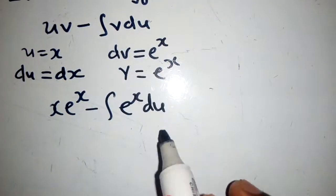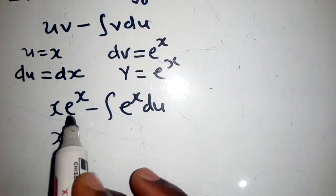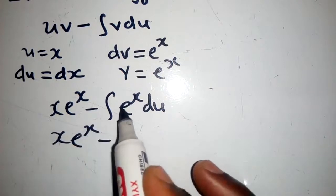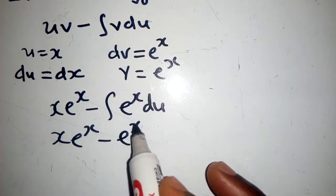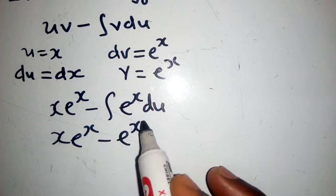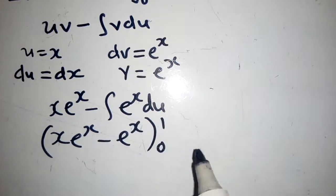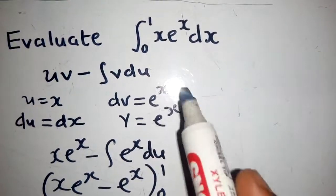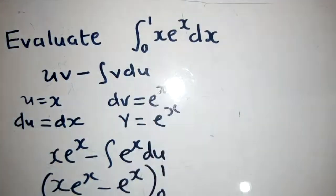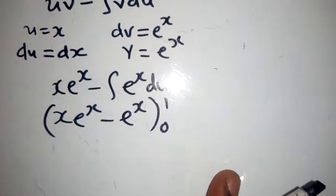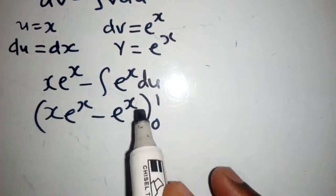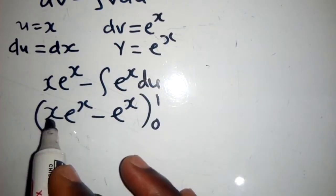Then we can integrate this. When we integrate, we can put the brackets and then the lower limit is zero, upper limit one. So I'm just getting the lower limit and upper limit.